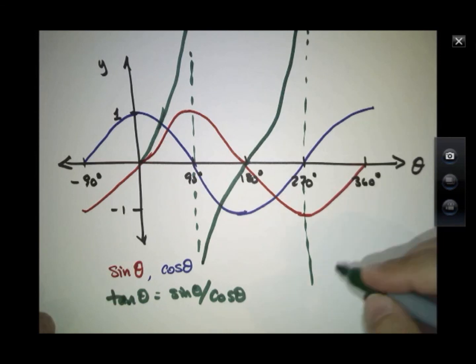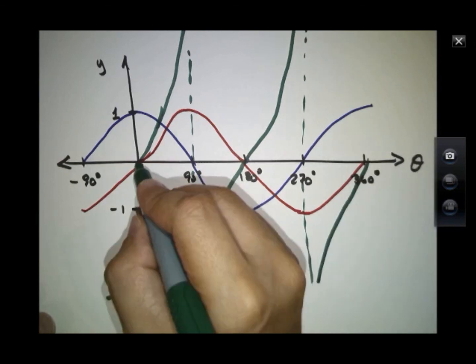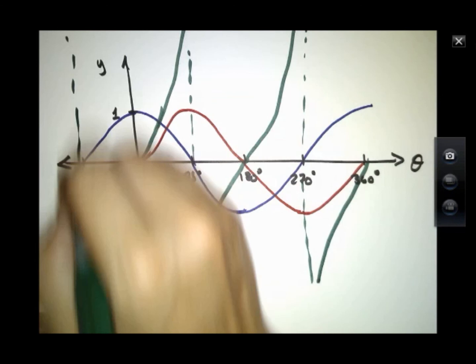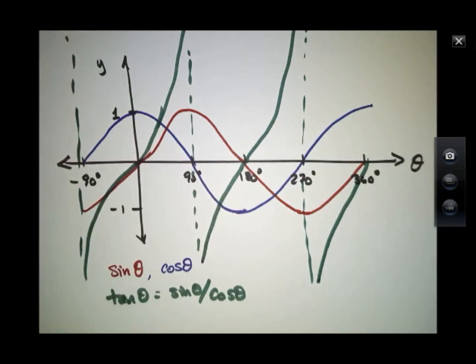And I have these dramatic arcs that look like so. So the tangent of theta is constantly going between minus infinity and plus infinity. And it goes through zero at multiples of 180 degrees: zero, 180, 360, and so on.